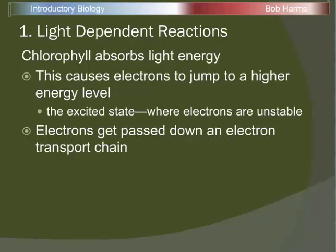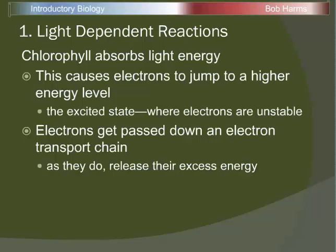Electrons pass from one chemical to another. As that electron moves down the chain, it's losing a little bit of its energy — think of the slinky going down the stairs example. That energy that the electron loses as it passes down the chain is going to be harnessed by the cell and converted into short-term energy in a chemical form that the cell can save up.